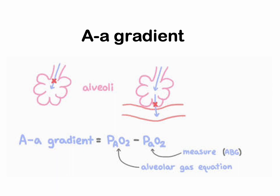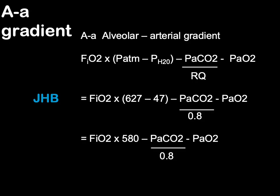A normal AA gradient is usually 10, ranging from 5 to 10 for a non-smoking patient breathing room air. The normal AA gradient increases with age — for every decade a patient has lived, their AA gradient is expected to increase by 1 mmHg. A conservative estimation for the normal AA gradient is age in years plus 10, divided by 4. The AA gradient is the alveolar minus the arterial gradient. In Johannesburg we use fairly standardized numbers in the equation.